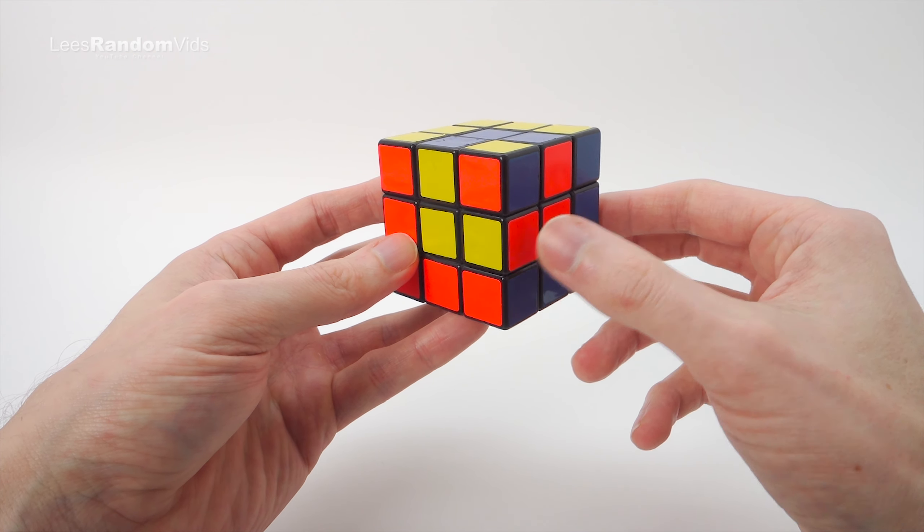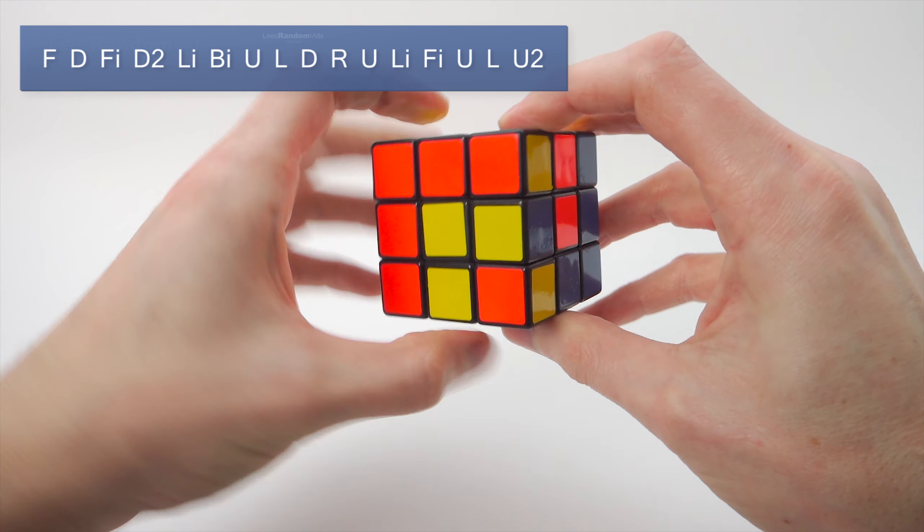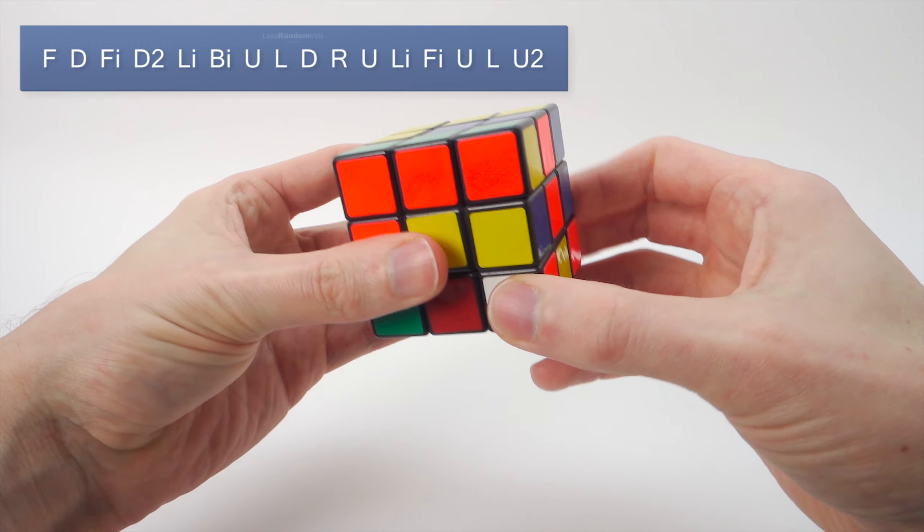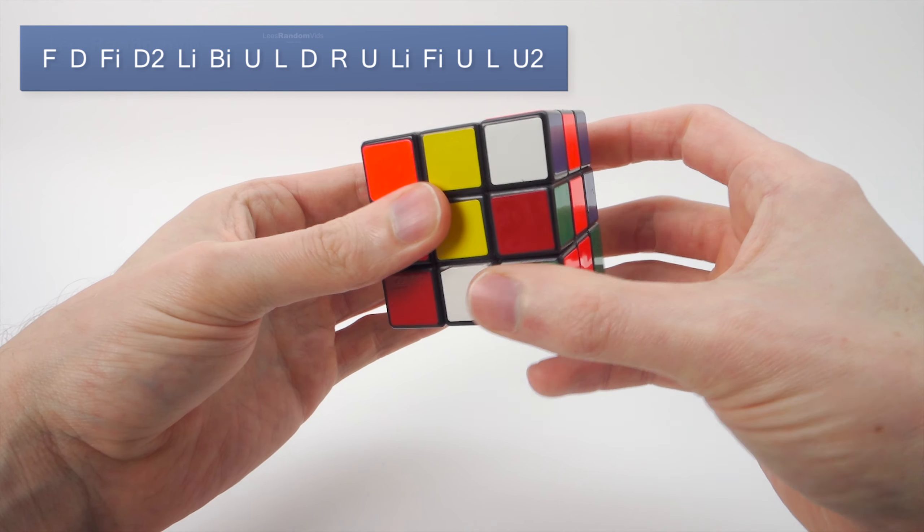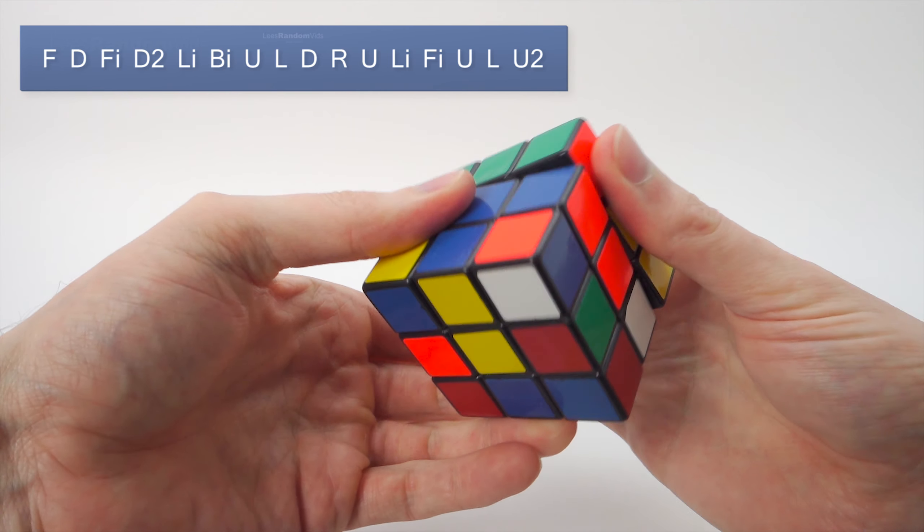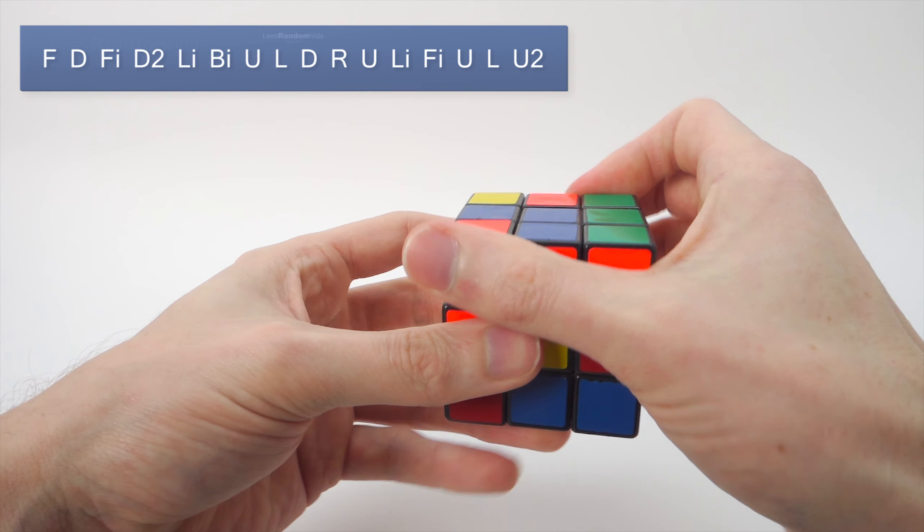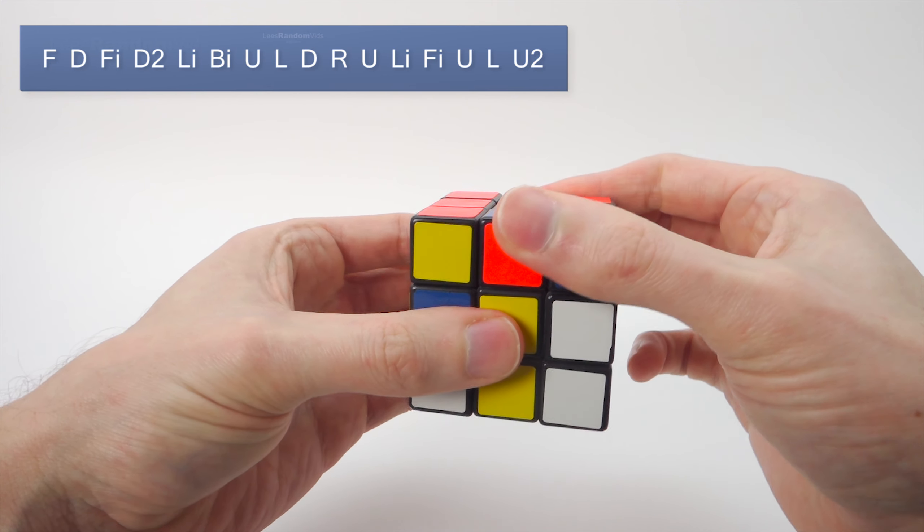For example, we go F D F inverse, D2, L inverse, B inverse, U L D R.